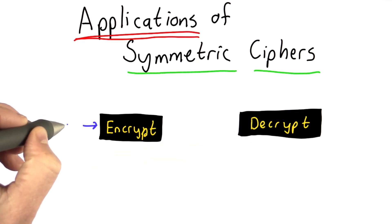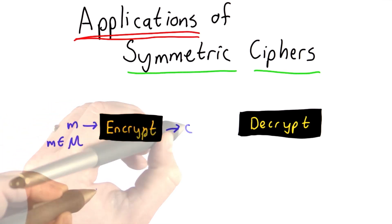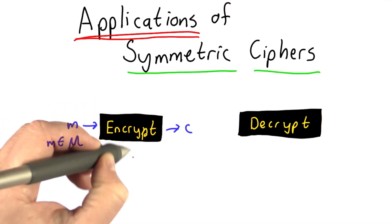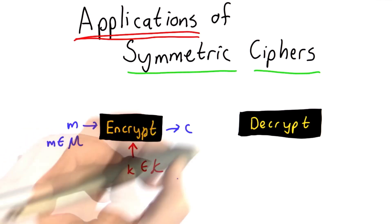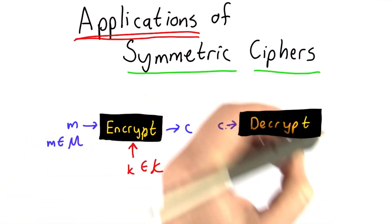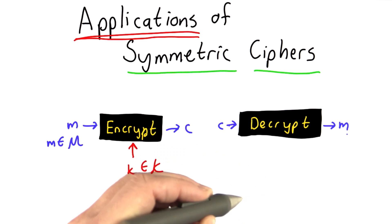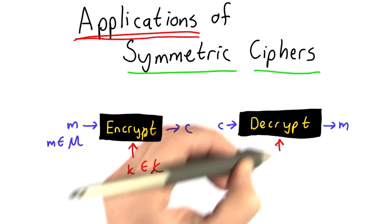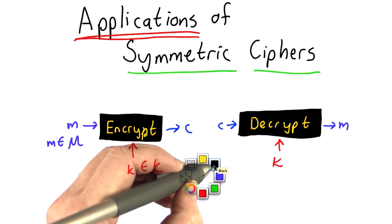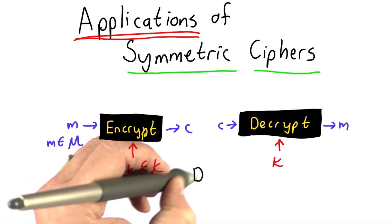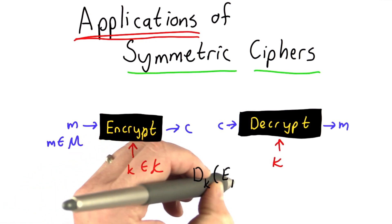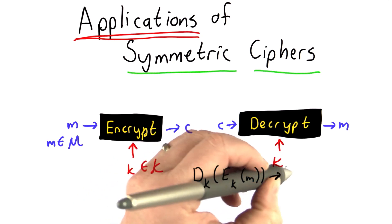Encrypt takes in a message from some message space and produces a ciphertext, and it also takes in a key from some key space. Decrypt is the inverse. It takes in a ciphertext and a message, and if it takes in the same key, it will produce the same message that we got. Our correctness property is that the decryption with the same key of a message encrypted with that key gives us the same message.